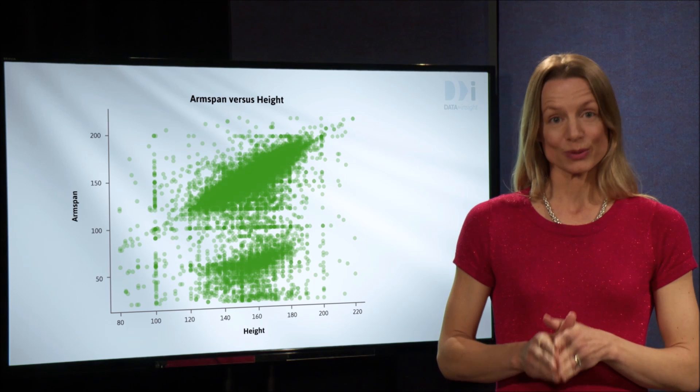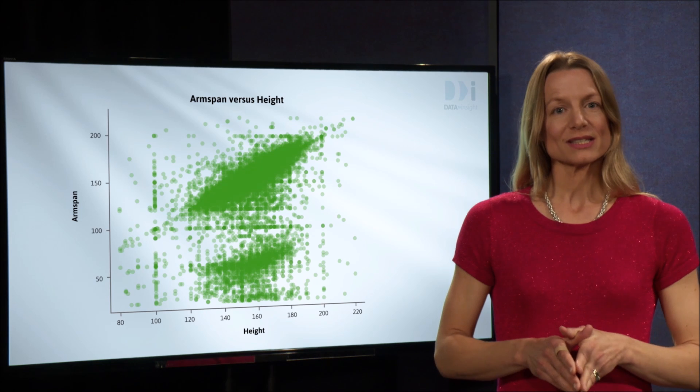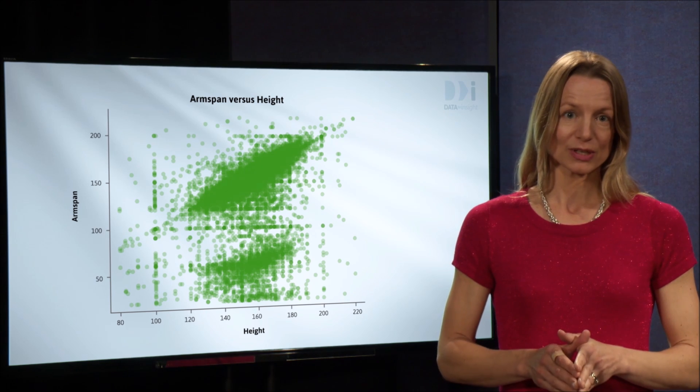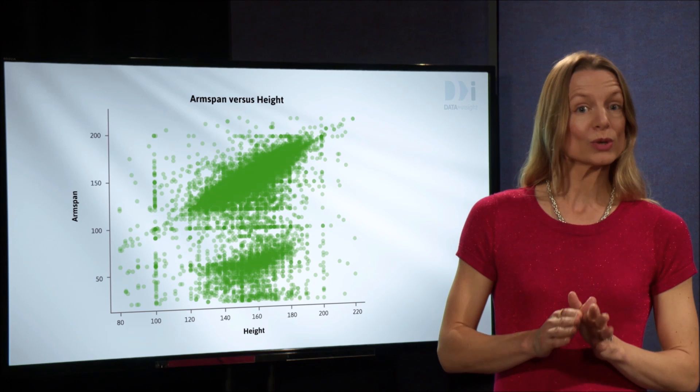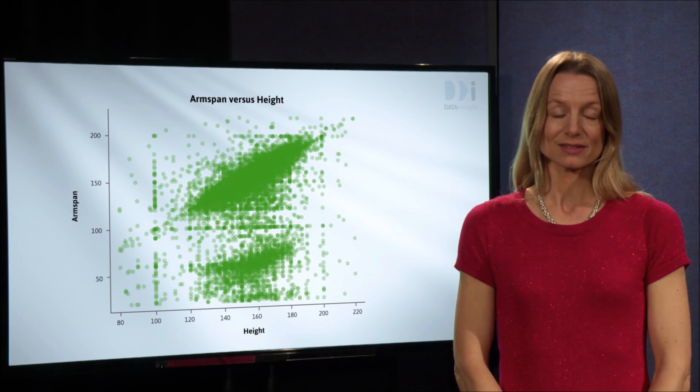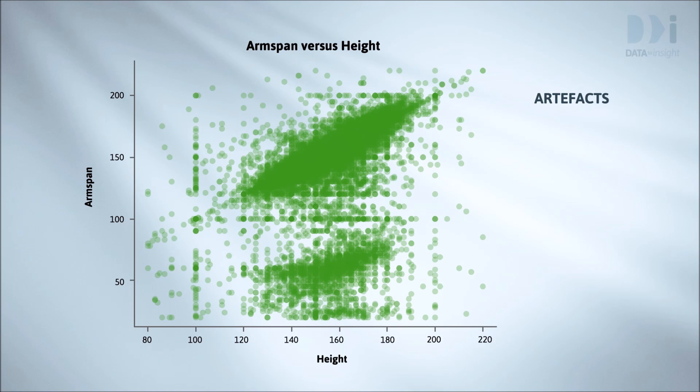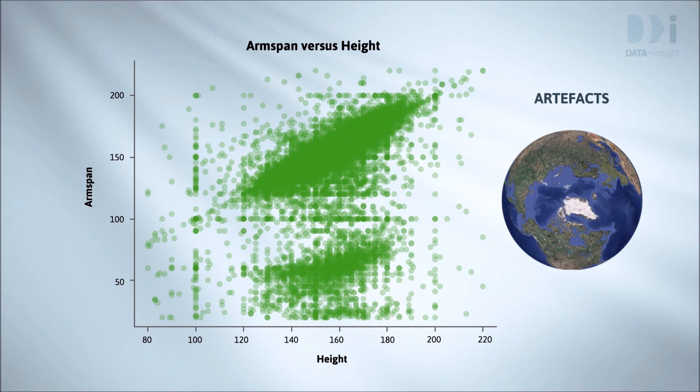So what's the point of all this? The point is that there are a lot of strongly visible patterns in this plot that have nothing to do with the real world of human body shapes. They are artefacts. Artificial patterns caused by deficiencies in the data collection process. They have nothing to do with the real subject under investigation. We're not looking at this, but something more like this.